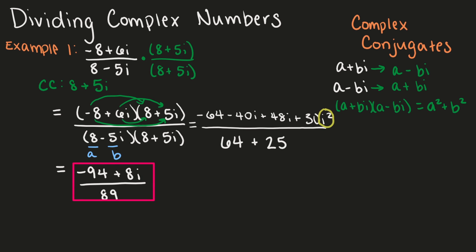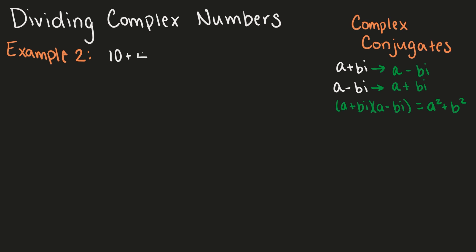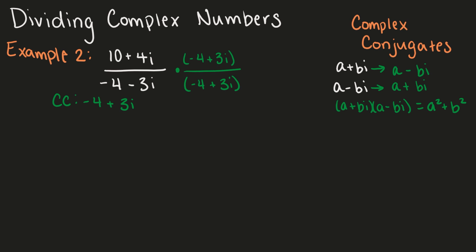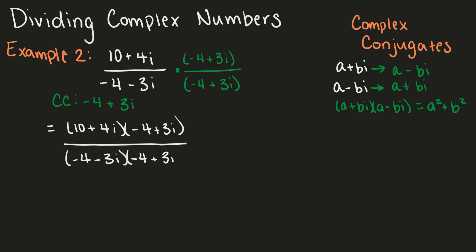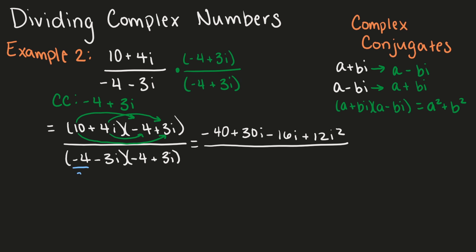Let's take one more example. We have 10 plus 4i over negative 4 minus 3i. Our complex conjugate is negative 4 plus 3i — the only sign we change is between the real and imaginary number. So we multiply our expression by negative 4 plus 3i over negative 4 plus 3i. That gives us 10 plus 4i times negative 4 plus 3i over negative 4 minus 3i times negative 4 plus 3i. Our denominator becomes 16 plus 9, and our final answer is 52 plus 14i over 25.